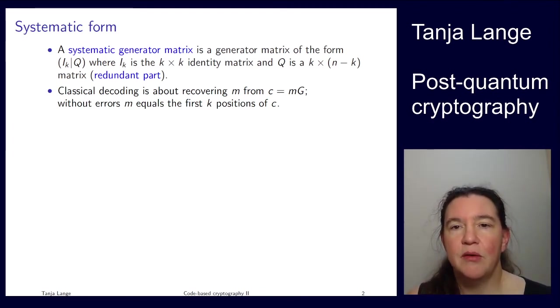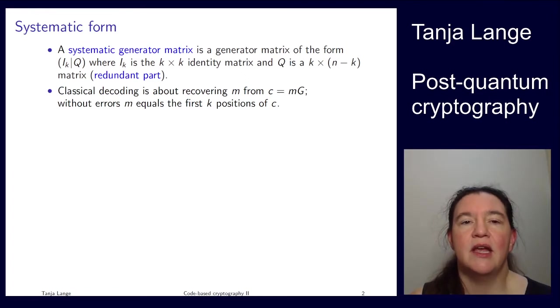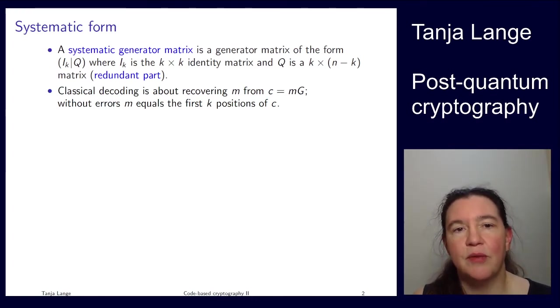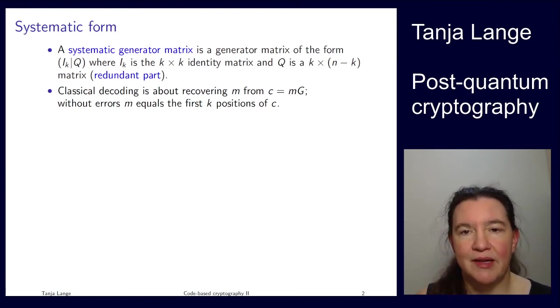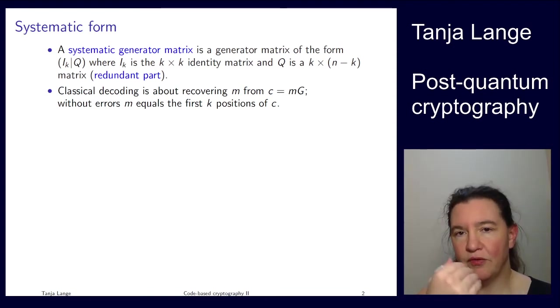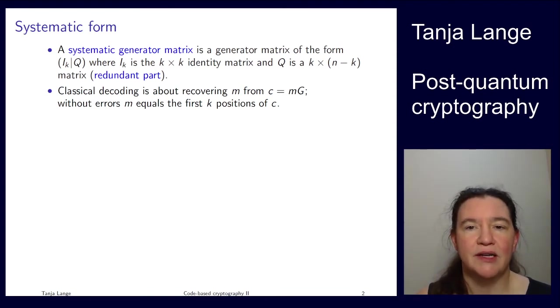So that means you are doing a full Gaussian elimination so that the first k by k sub matrix becomes an identity matrix. Since we are over F2, this is not always possible, as I said, just one third of the time, roughly. But if it is possible, then this is the particular nice way of writing it. So the Q becomes the redundant part, the k times n minus k, and the first part is called the information part or the information bits. And then if you are thinking of the classical decoding problem, where you want to recover the message m from m times g, the first k positions of c are just a copy of m.